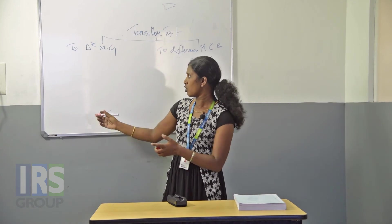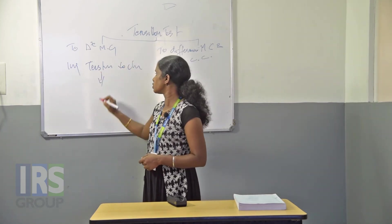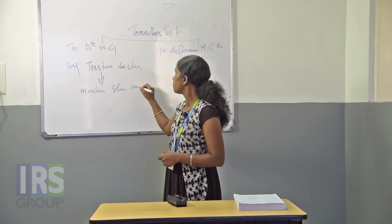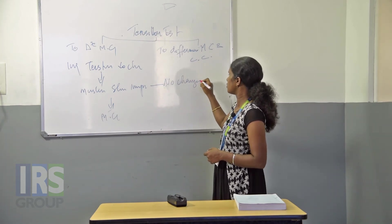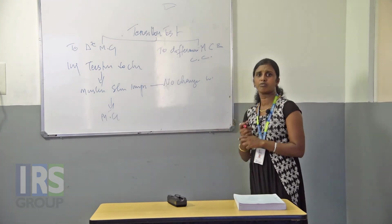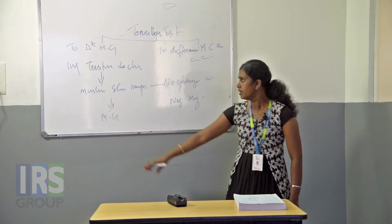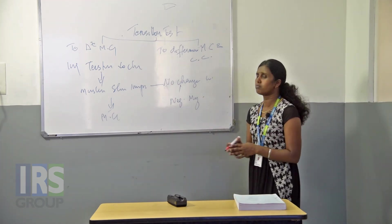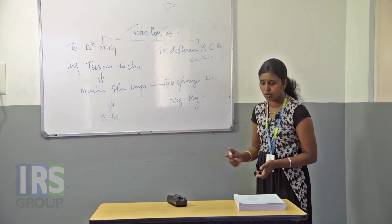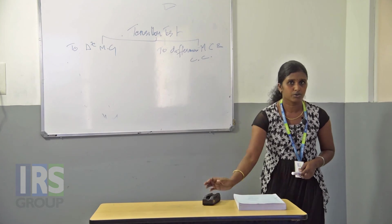To diagnose myasthenia gravis using the Tensilon test: administer Tensilon to the client. If muscle strength improves after the first dose, it is positive for myasthenia gravis. If there is no change in muscle strength and the client continues showing previous episodes of muscle weakness, it is negative for myasthenia gravis, indicating another cause.